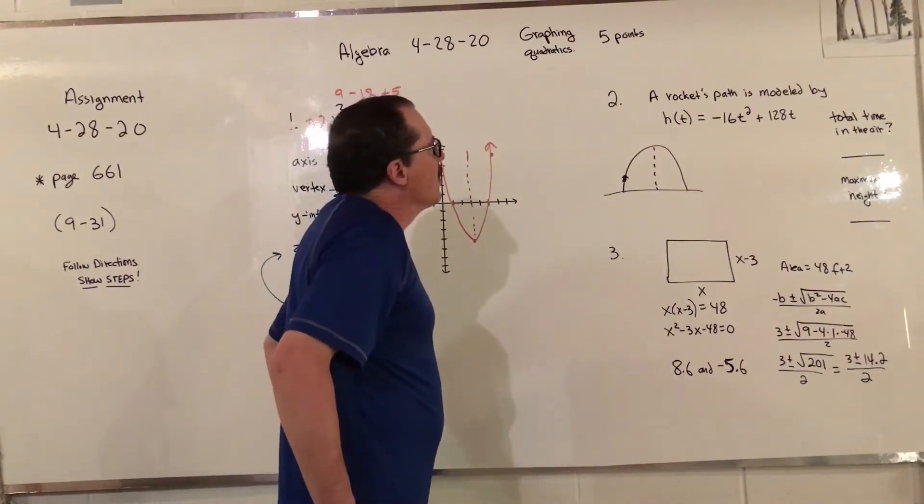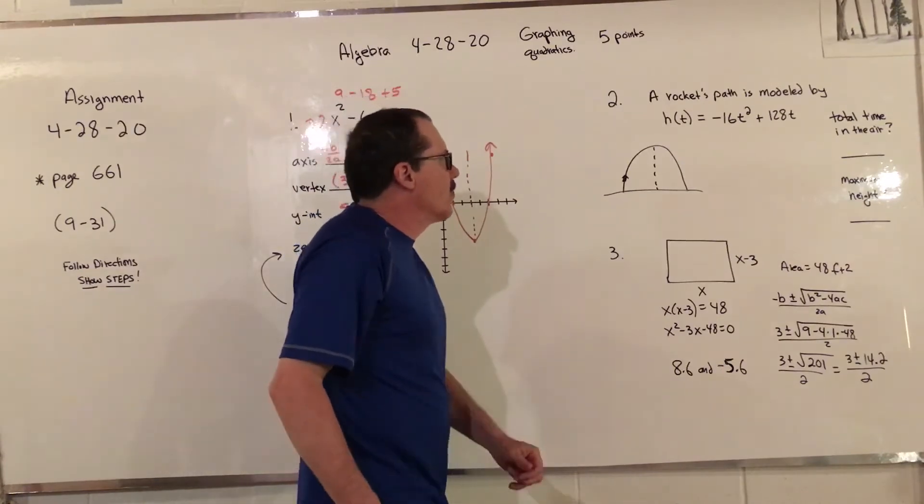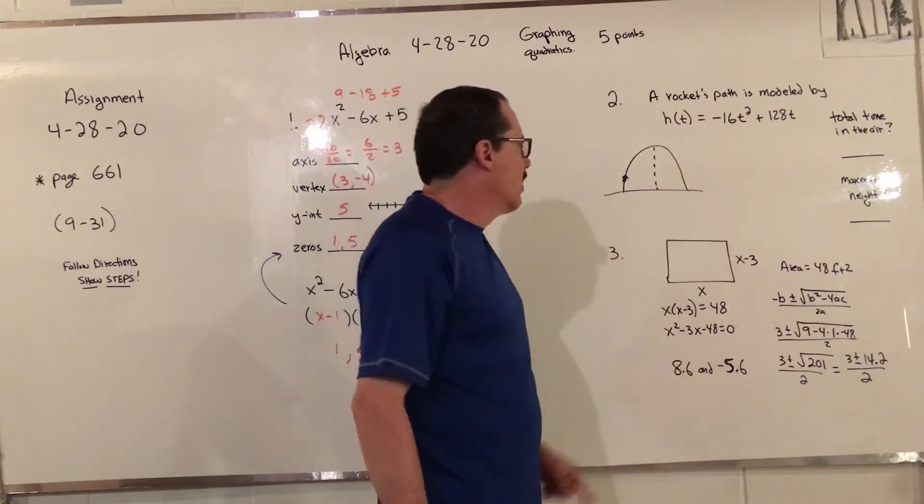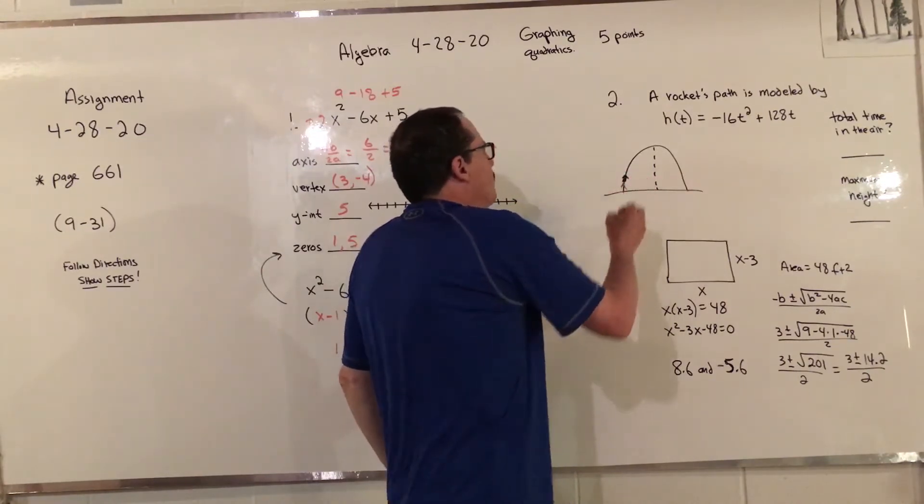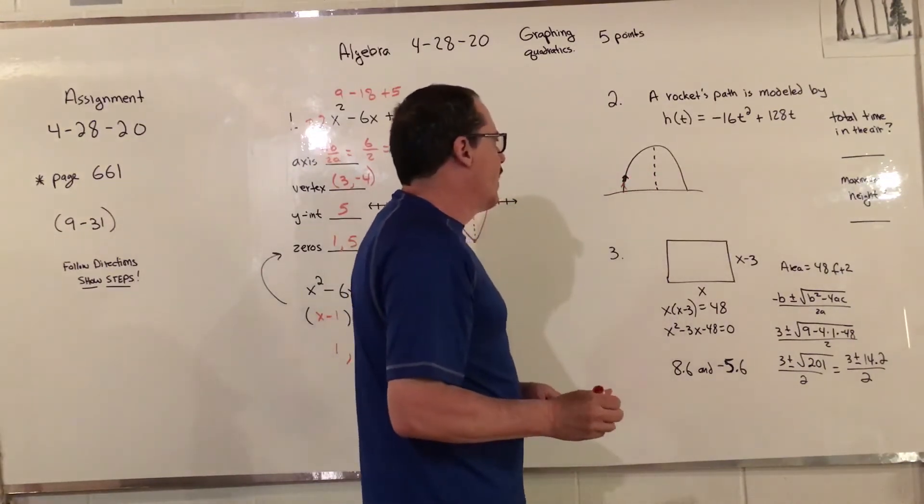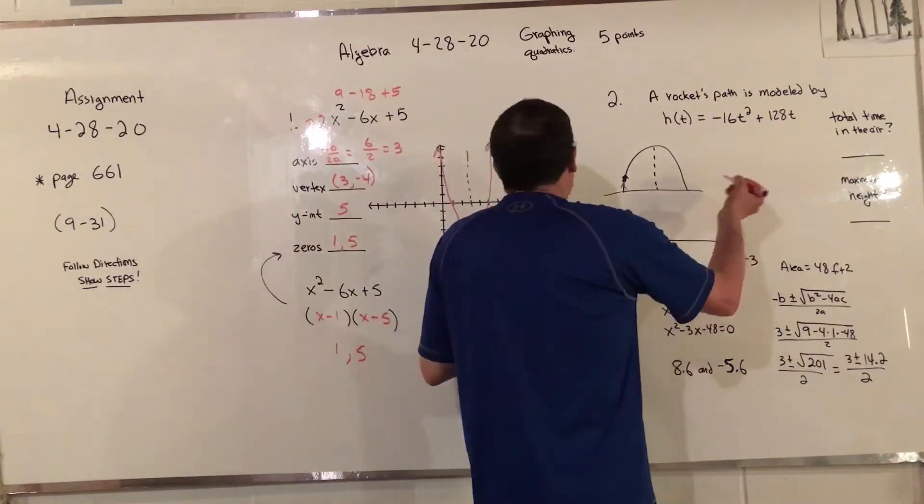This is similar to something that's in the book. Rocket's path is modeled by h(t) equals negative 16t squared plus 128t. Total time in the air, I always draw a picture first. There's our little rocket going up.